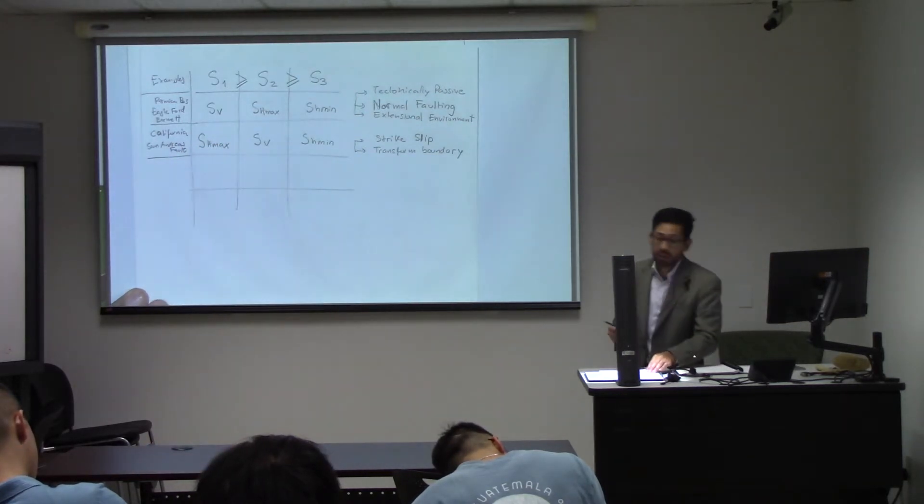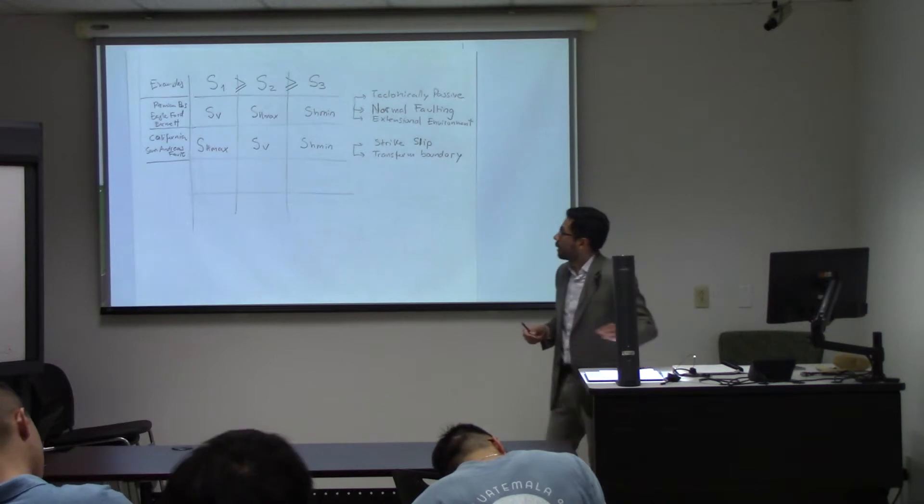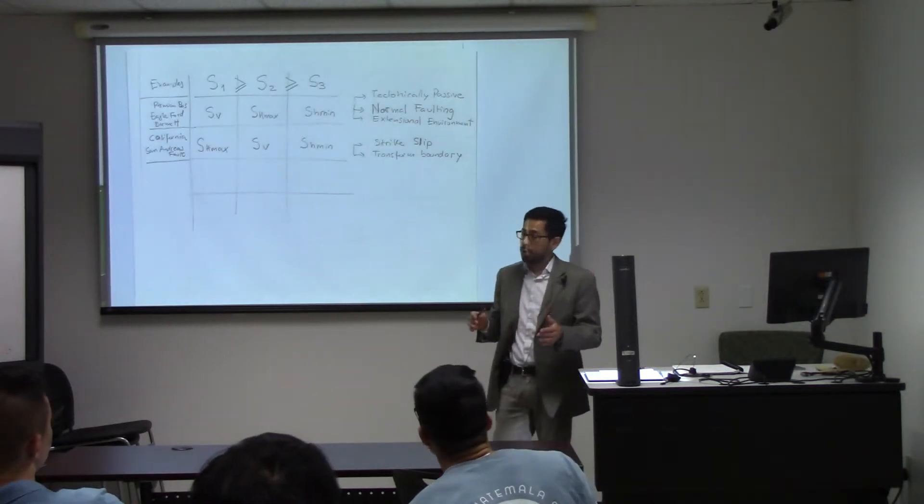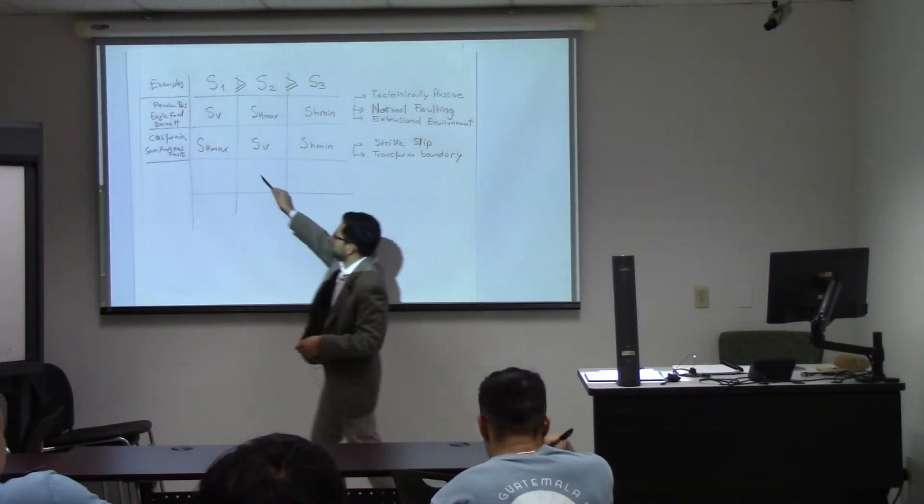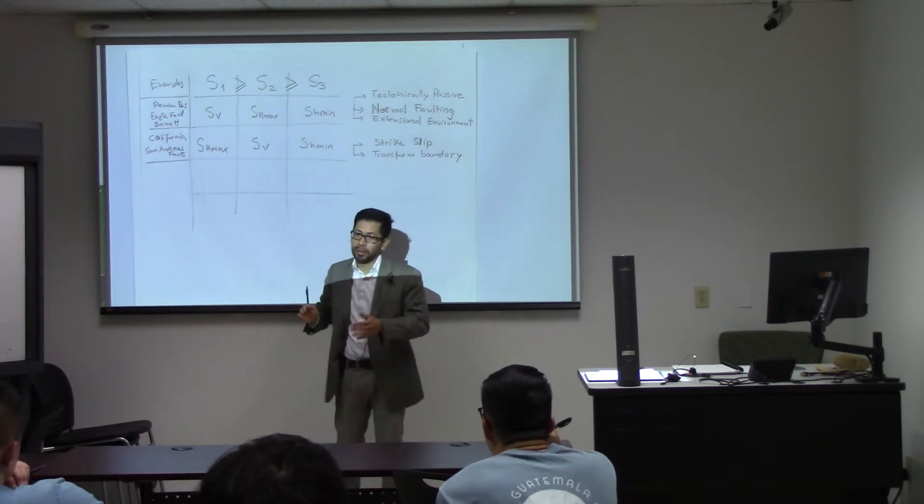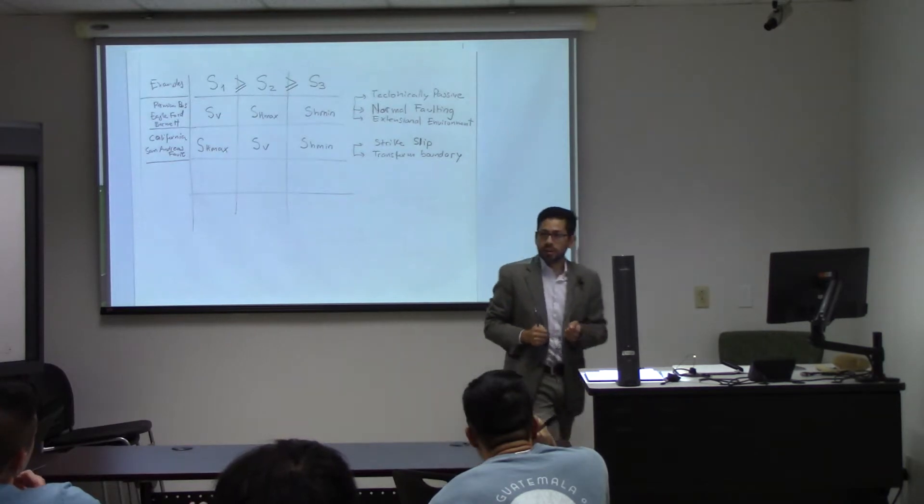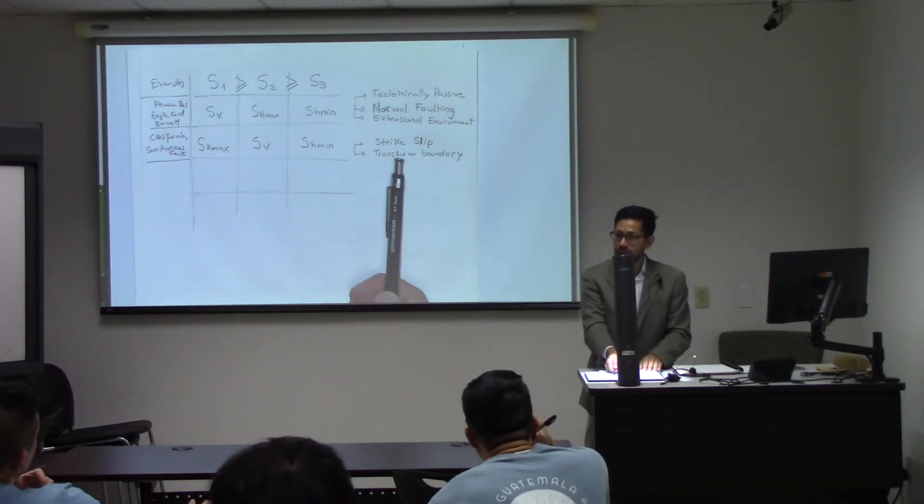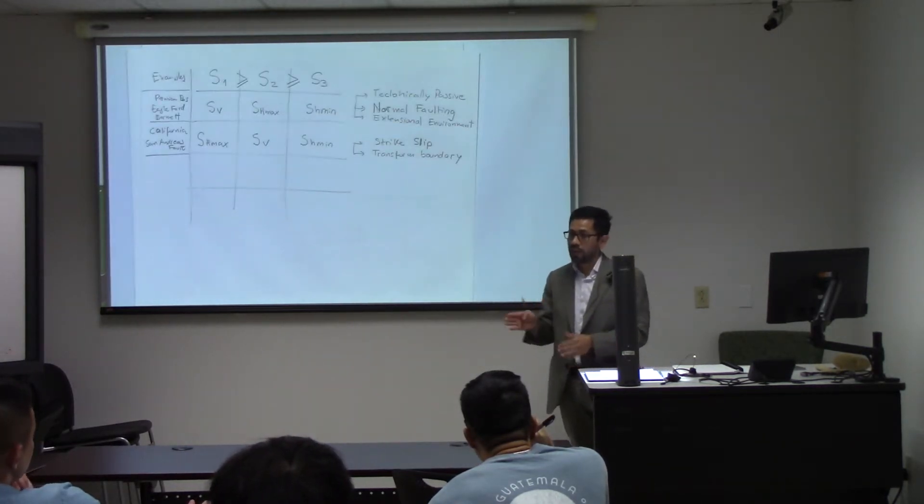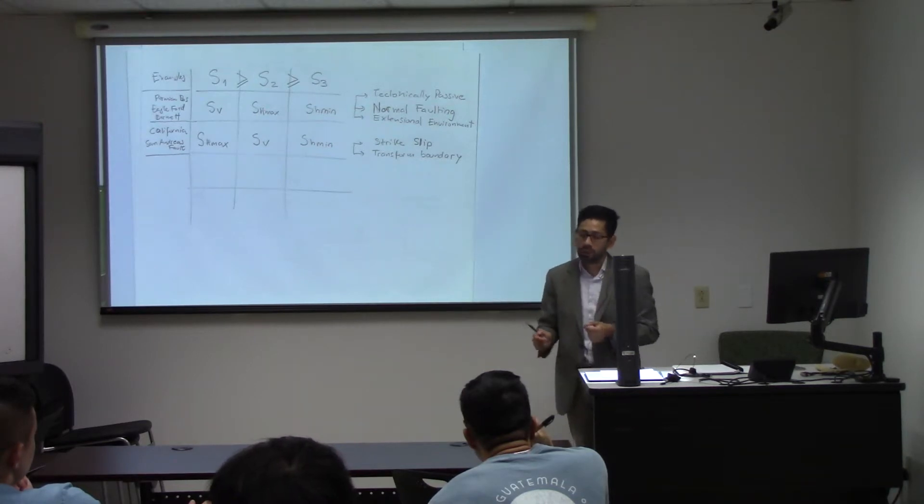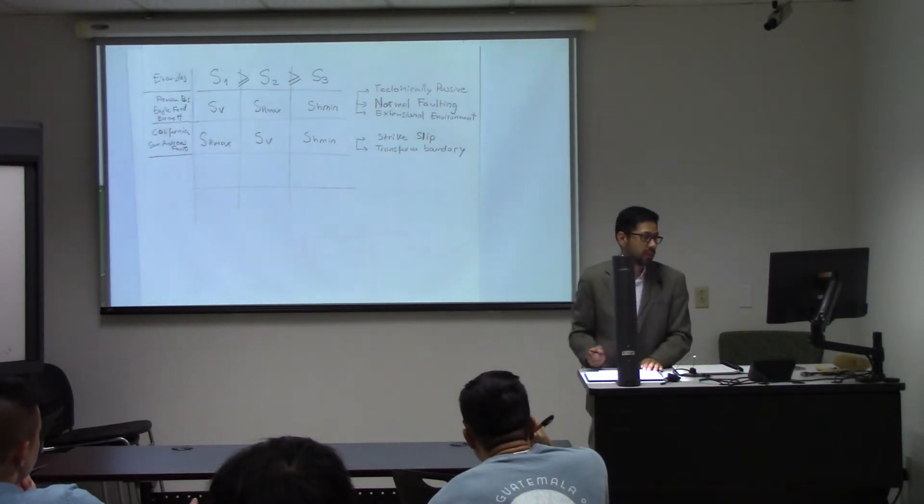It's a transform boundary. In this case because the maximum principal stress is the biggest and minimum principal stress is the smallest you have shear if you see that from the surface. And that makes the faults to be vertical and to be oriented respect to these two horizontal stresses.